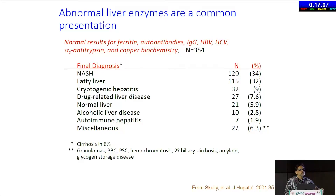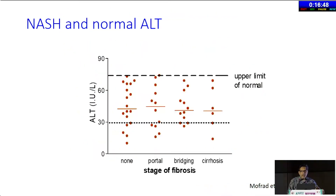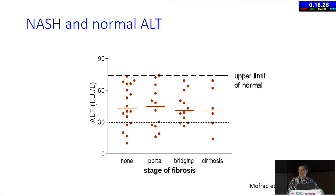Abnormal liver enzymes — once you start looking, within the population of people who have abnormal liver enzymes, after you've ruled out hepatitis C, hepatitis B, and all the usual things, NASH becomes a leading cause of unexplained elevation of liver enzymes. But it is important to remember that NASH can exist with completely normal enzymes. In fact, 25% of people with just about any chronic liver disease have persistently normal liver enzymes. The presence of normal liver enzymes does not necessarily mean there's nothing going on in the liver.